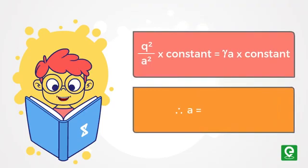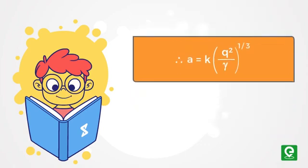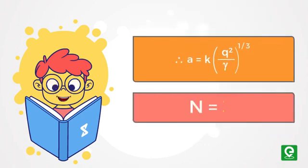Therefore, a is equal to K times Q squared by gamma, whole raised to the power 1 by 3. Hence, n equals 3.